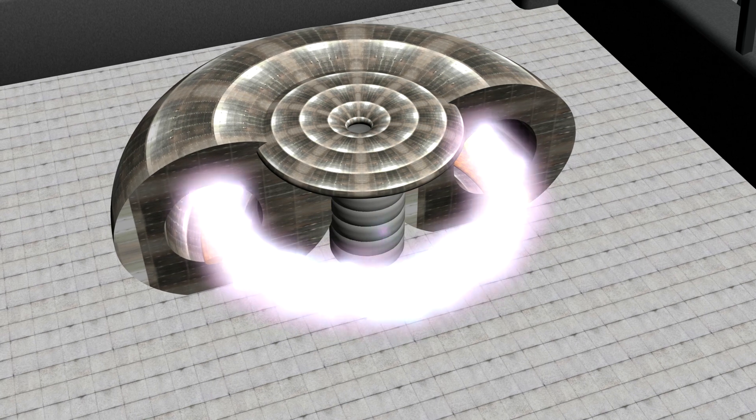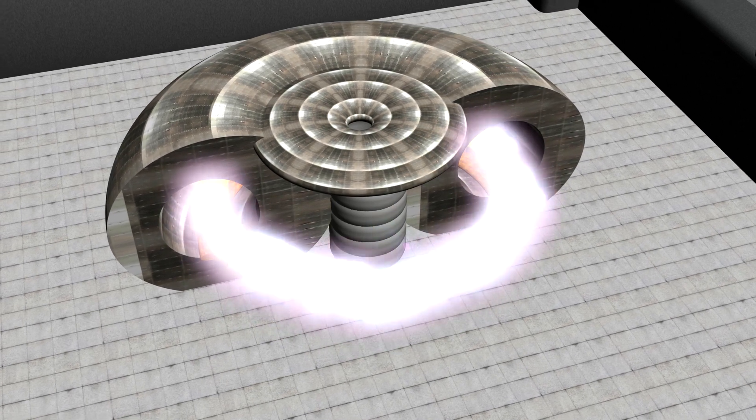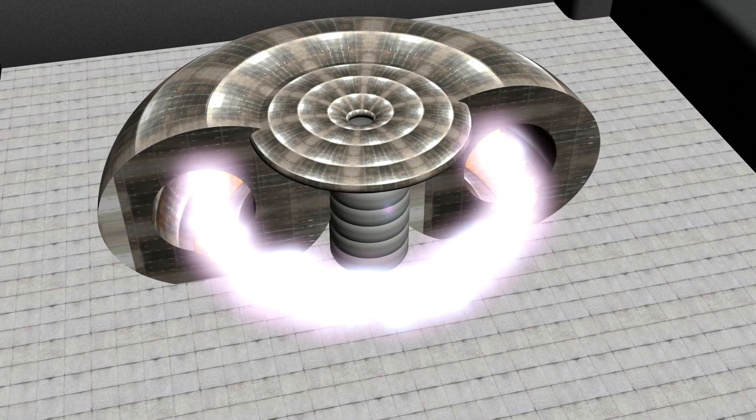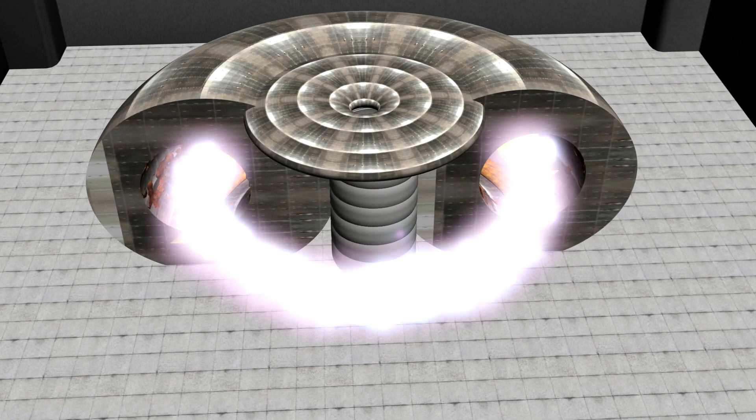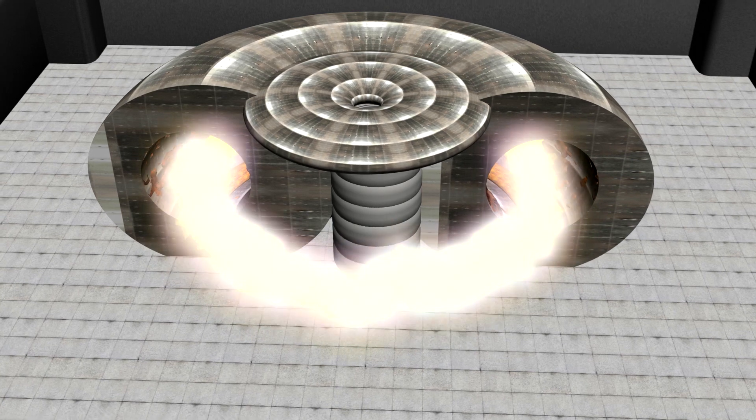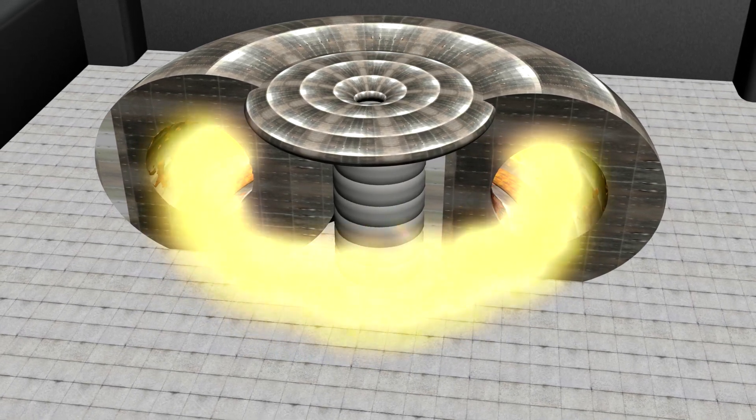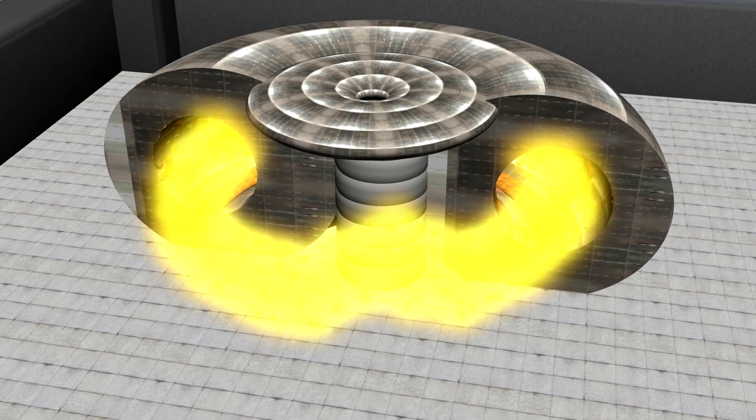Such gradual degradation of the fusion reactor's inner walls and other components is actually quite bad, as it pollutes the plasma with heavy particles that absorb more energy. This ultimately causes the plasma to become unstable.